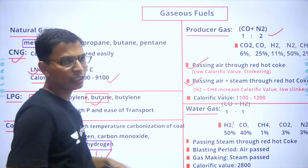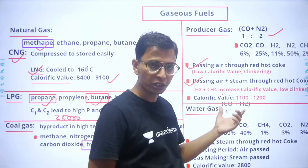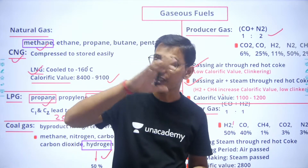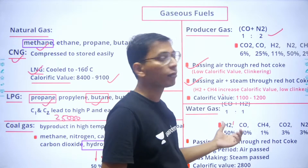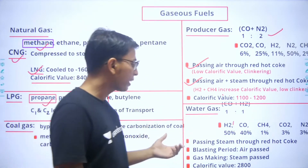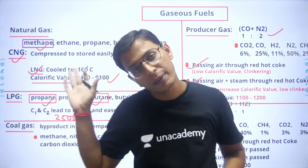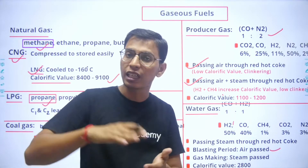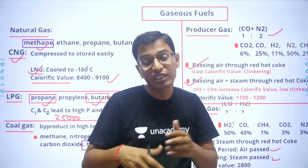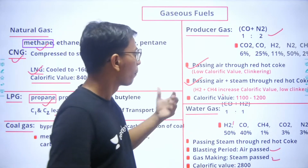Water gas is generally called blue water gas. Its composition is carbon monoxide and hydrogen, with minor amounts of methane, CO₂, and nitrogen. The production involves two periods: first, the blasting period — air is passed to make the coal red-hot; second, the gas-making period — steam is passed through the red-hot coke to produce CO and H₂. This blasting period and gas-making period cycle is repeated continuously. The calorific value of water gas is around 2800 kcal/Nm³.